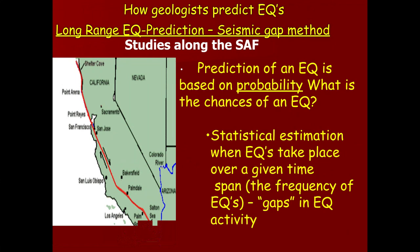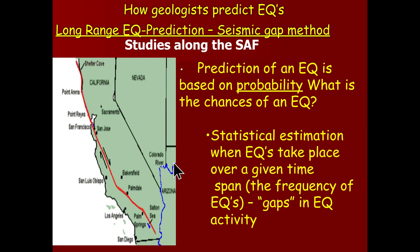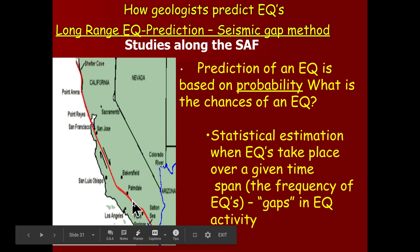Geologists have used the San Andreas Fault as an area to explore earthquake prediction. Studies observe the frequency of earthquakes and look for what are called gaps in the seismic record. The latest prediction method is the seismic gap method. Looking at the San Andreas Fault, it traverses the southern part of California, east of Los Angeles, with a kink near the Grapevine area, then through Bakersfield, the Carrizo Plain, and up through the Bay Area in San Francisco.